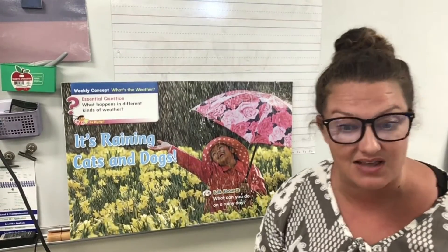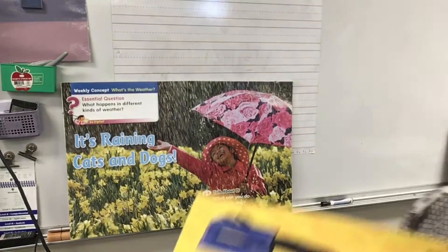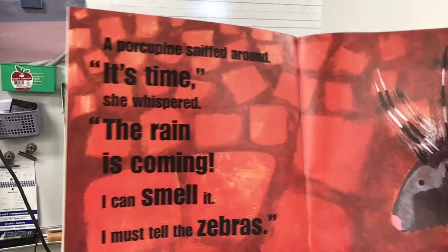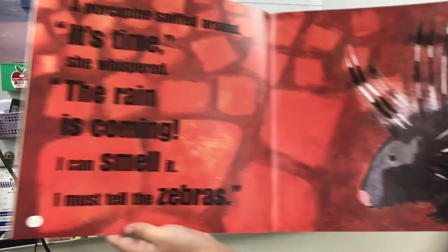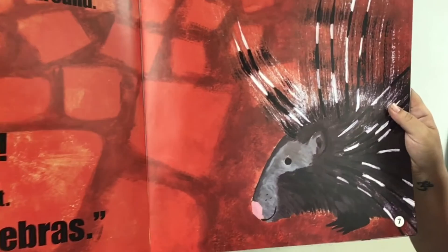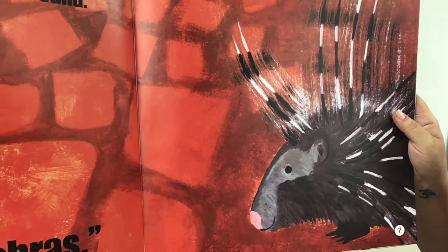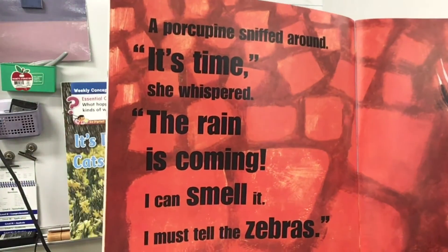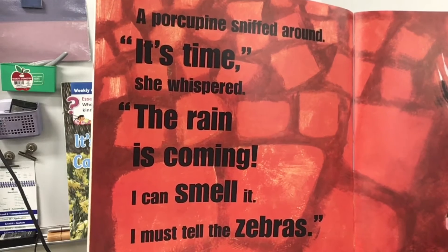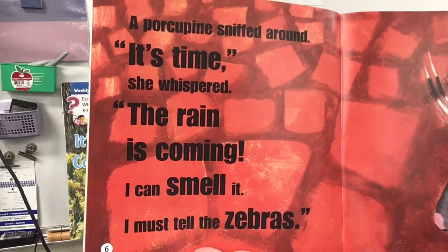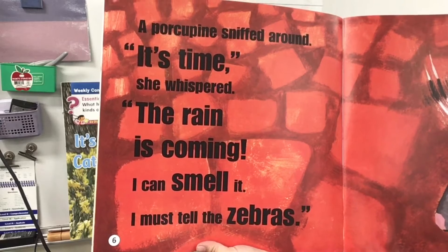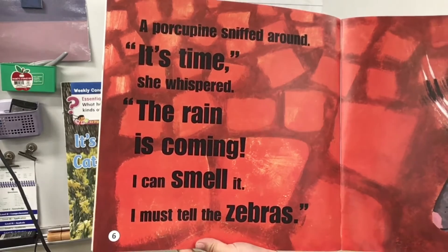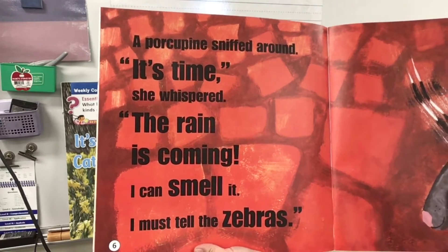A porcupine sniffed around — that's a porcupine with those big long quills. 'It's time,' she whispered. 'The rain is coming. I can smell it. I must tell the zebras.'